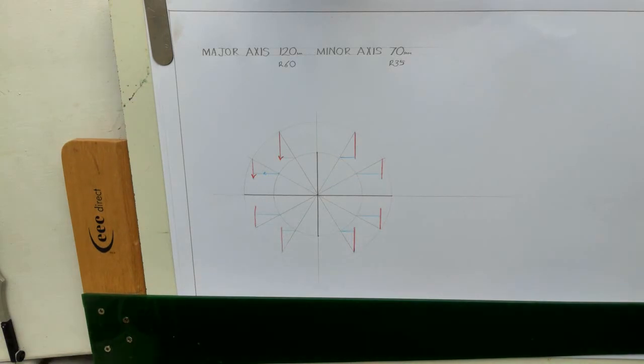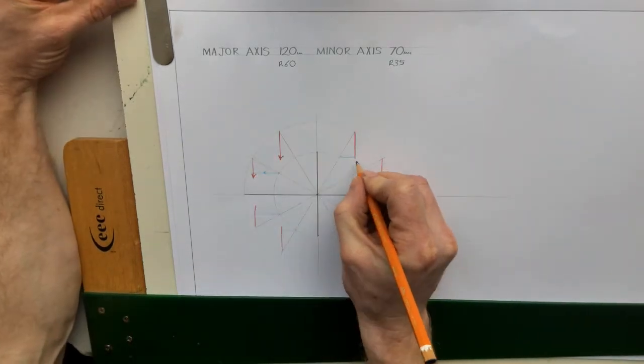So that gives us 12 points out, 12 points out along the cross center, down here.